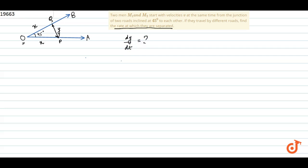So for this question, let's apply cosine formula on triangle OPQ. If we apply cosine formula on this, PQ square is equal to OP square plus OQ square plus 2OP times OQ into cos 45 degrees.